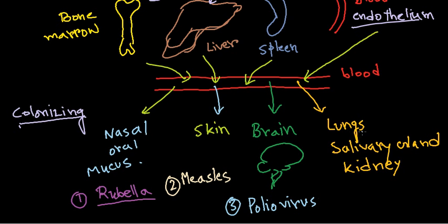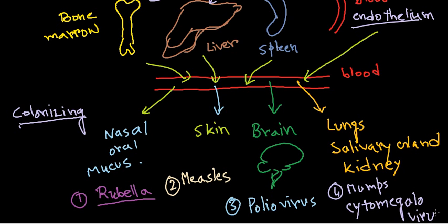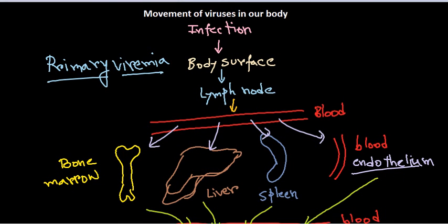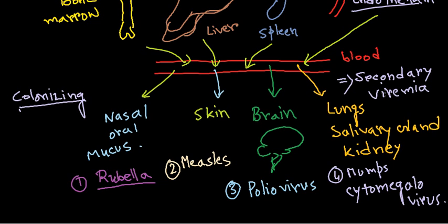For viruses that colonize in the lungs, salivary glands, and kidneys, the examples are mumps virus and cytomegalovirus. These are the different types of viral examples colonizing in different regions. When the virus moves through the bloodstream into these regions — nasal/oral mucous membranes, skin, brain, or lungs — this part of the response is called secondary viremia.